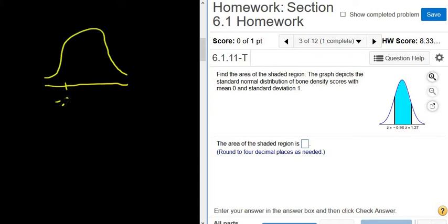Here's negative 0.98. And then here's 1.27. These numbers here are called z-scores.